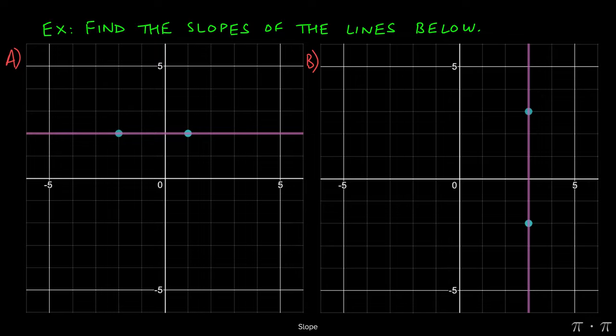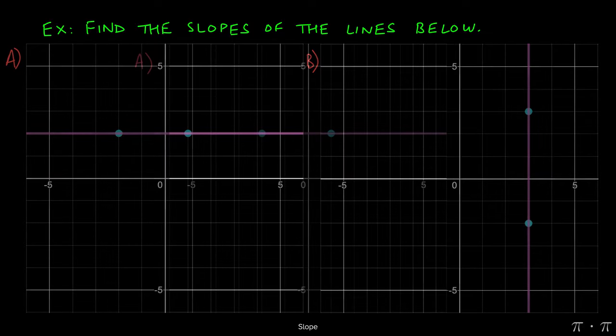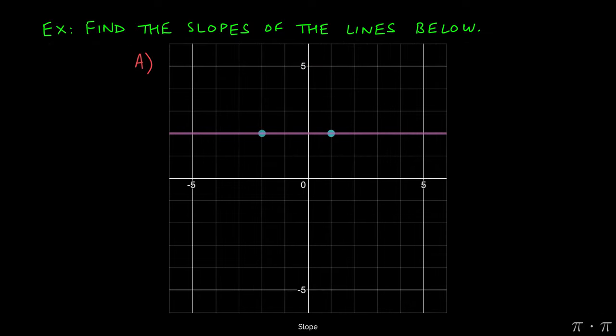Let's say we're asked to find the slopes of these two lines here. Starting with the one on the left, we see that this line passes through two known points, negative 2 comma 2 and 1 comma 2.